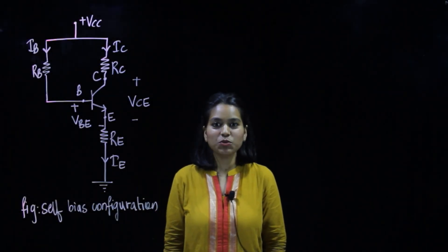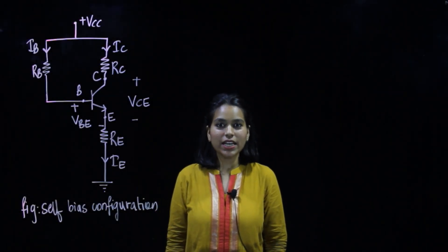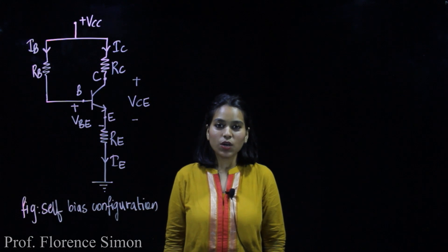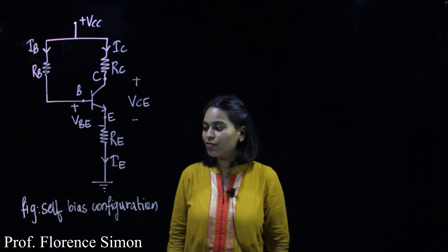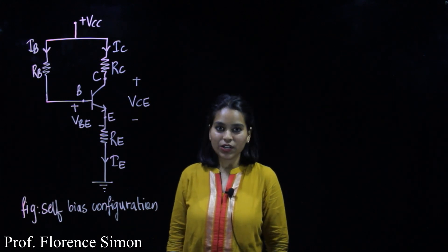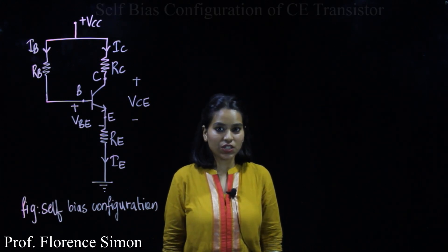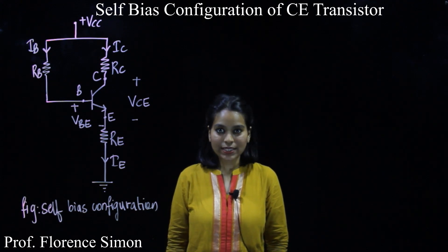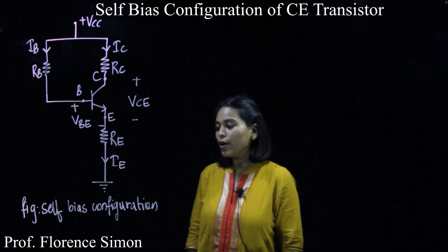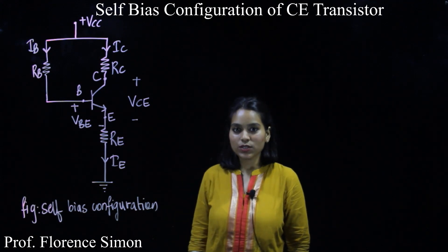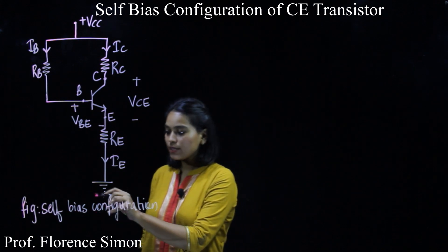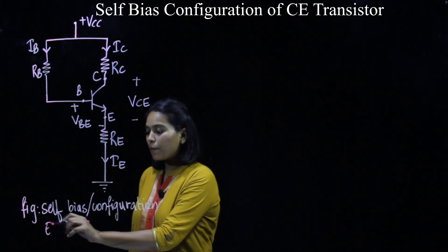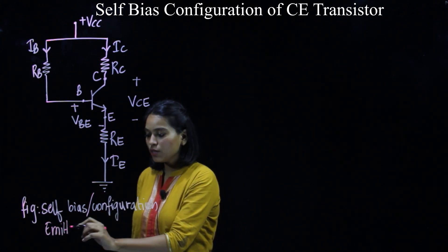Hello everyone and welcome to MES's e-learning channel. In this video we will be seeing the self-bias configuration of a CE transistor. This is the second type of biasing, and self-bias configuration is also called the emitter bias configuration.